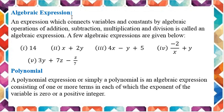Algebraic Expressions. An algebraic expression connects variables and constants by algebraic operations of addition, subtraction, multiplication, or division. A few algebraic expressions are given below. In example number 1, it is 14 — it is a constant. In example number 2, x plus 2y — it is an algebraic expression in which x and y are the variables and 2 is a constant or coefficient.